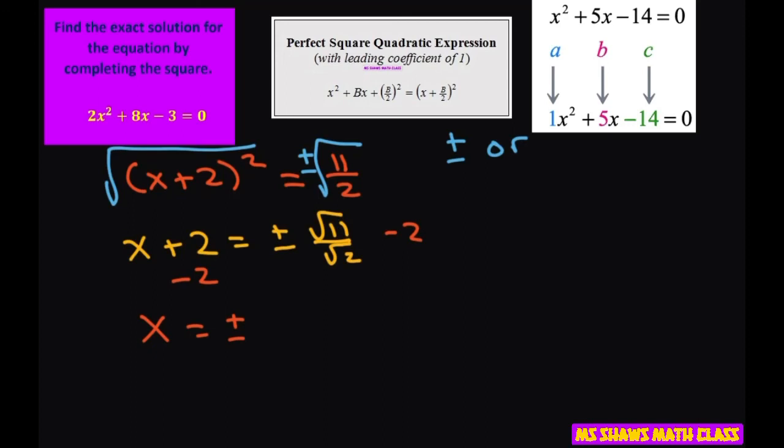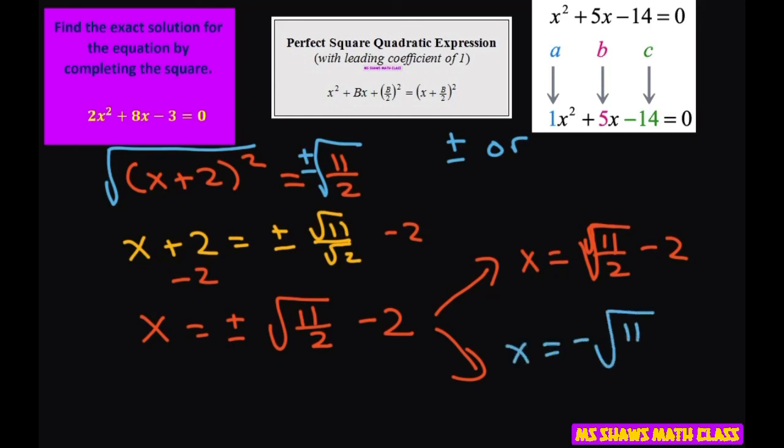So we're just going to write this as square root of 11 halves minus 2. If you want to break it up, that would be x equals square root of 11 divided by 2 minus 2. Make sure the square root goes over the whole thing. Or x equals negative square root of 11 divided by 2 minus 2. And that's it.